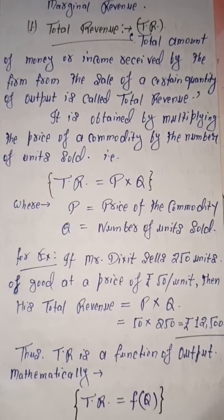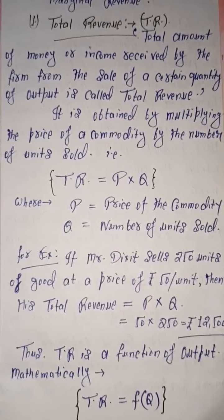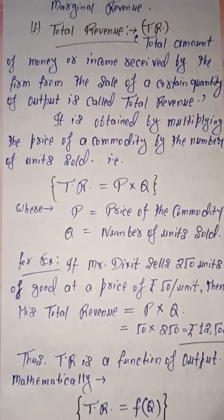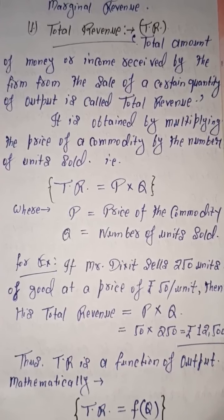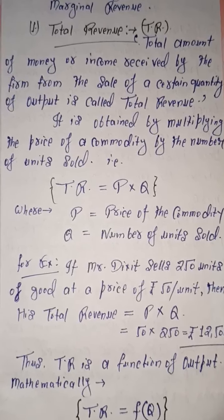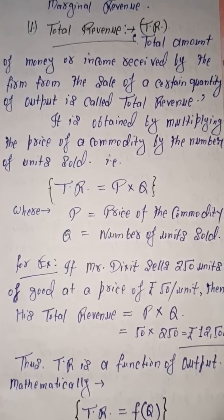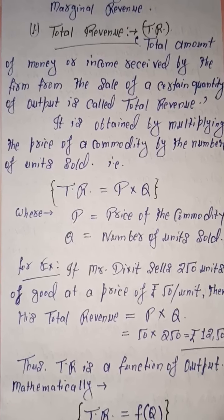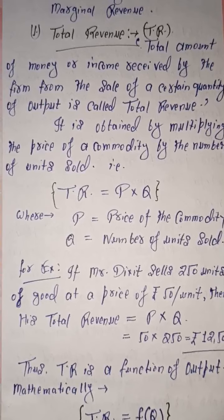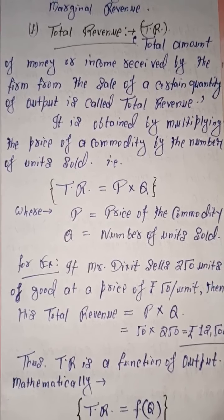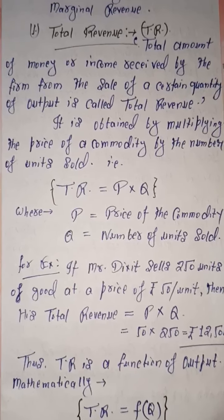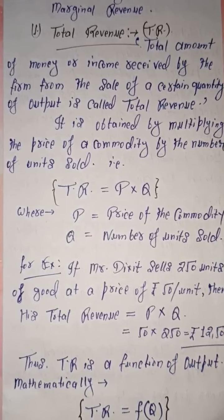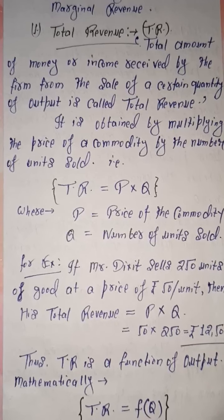What is the concept of total revenue? Total revenue is defined as the total amount of money or income received by the firm from the sale of a certain quantity of output. The total amount of money or income the firm receives after selling a certain quantity in the market is known as total revenue. The formula to calculate it: if we multiply the price of the commodity by the number of units sold, the value we get is known as total revenue.